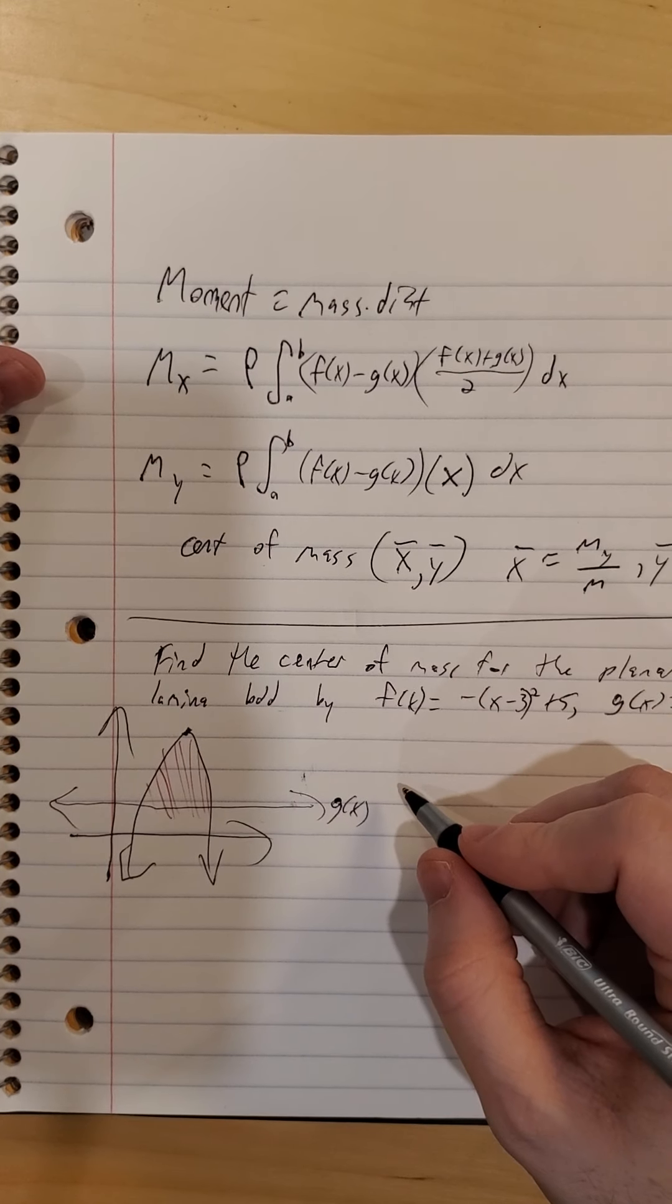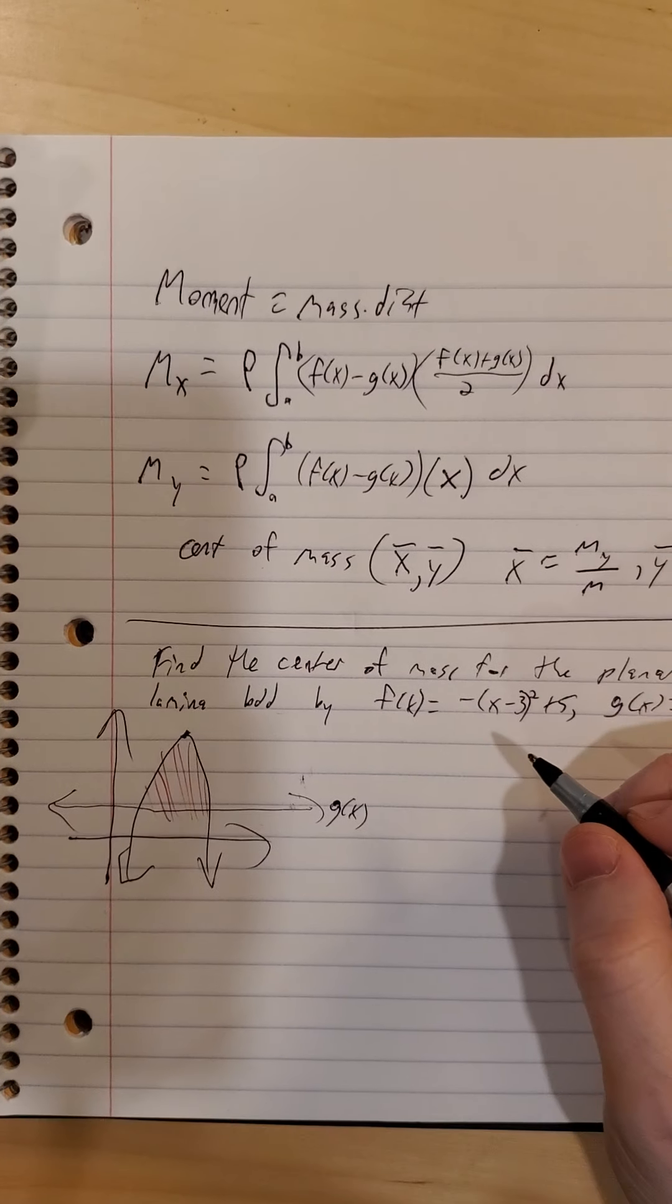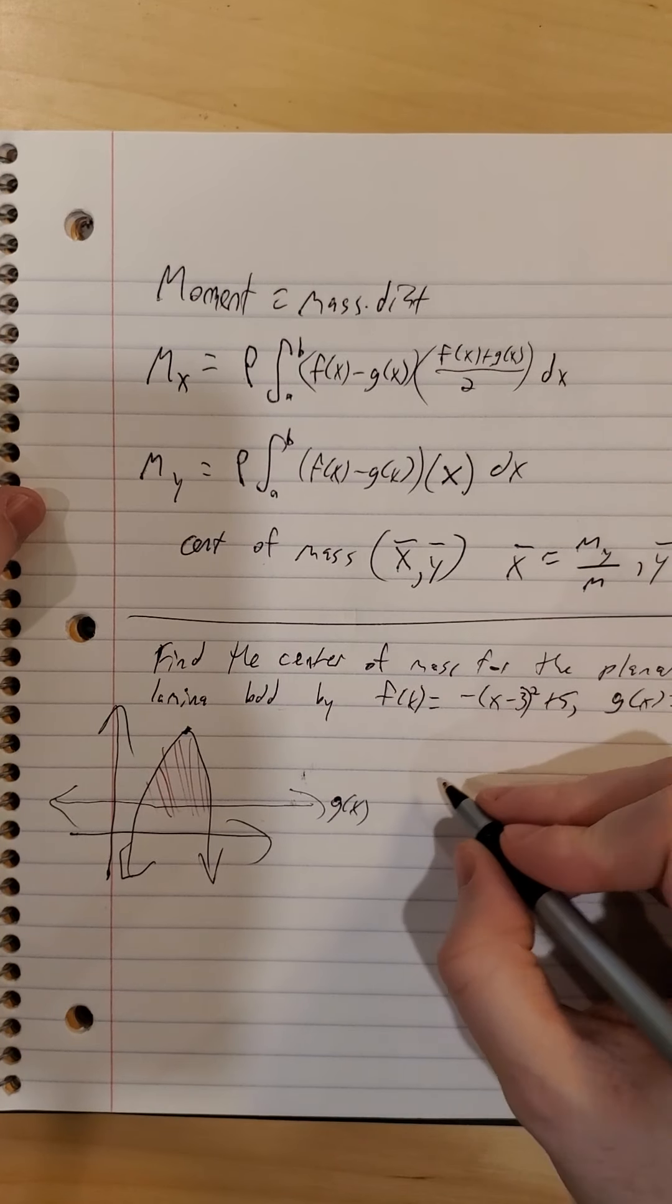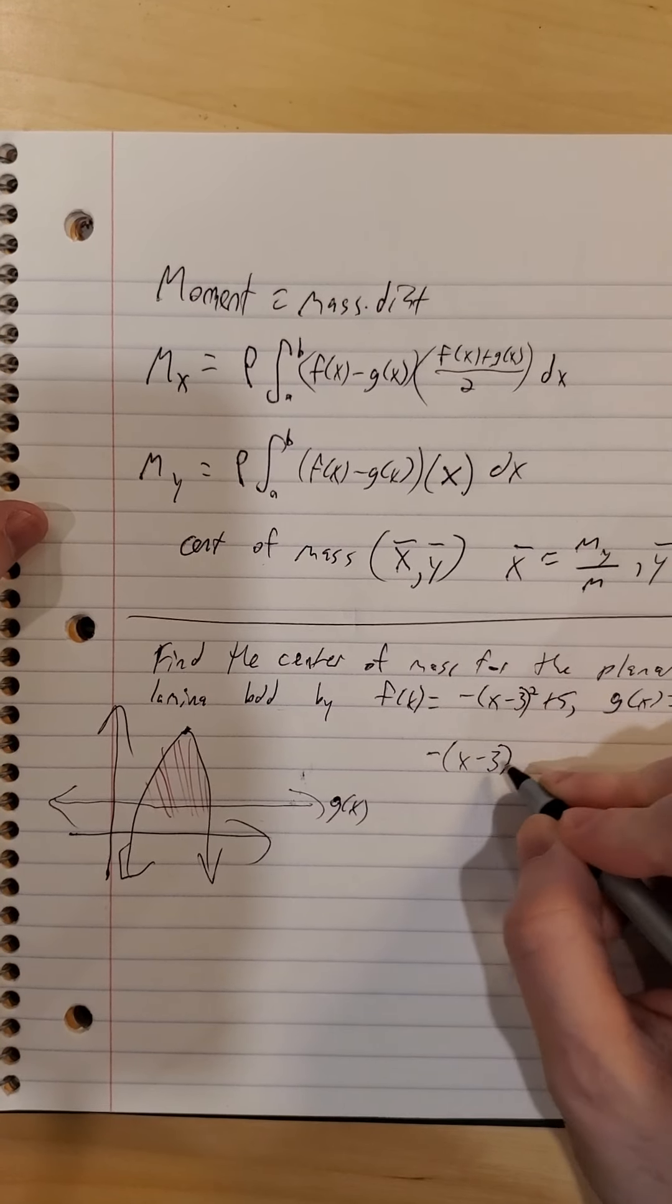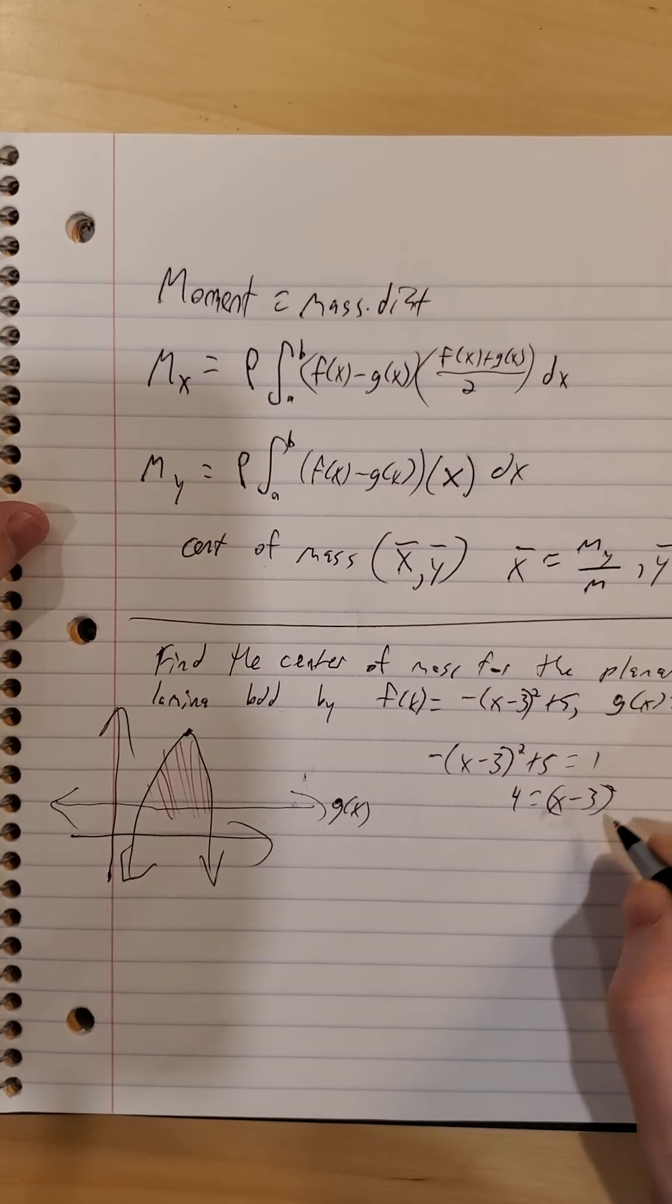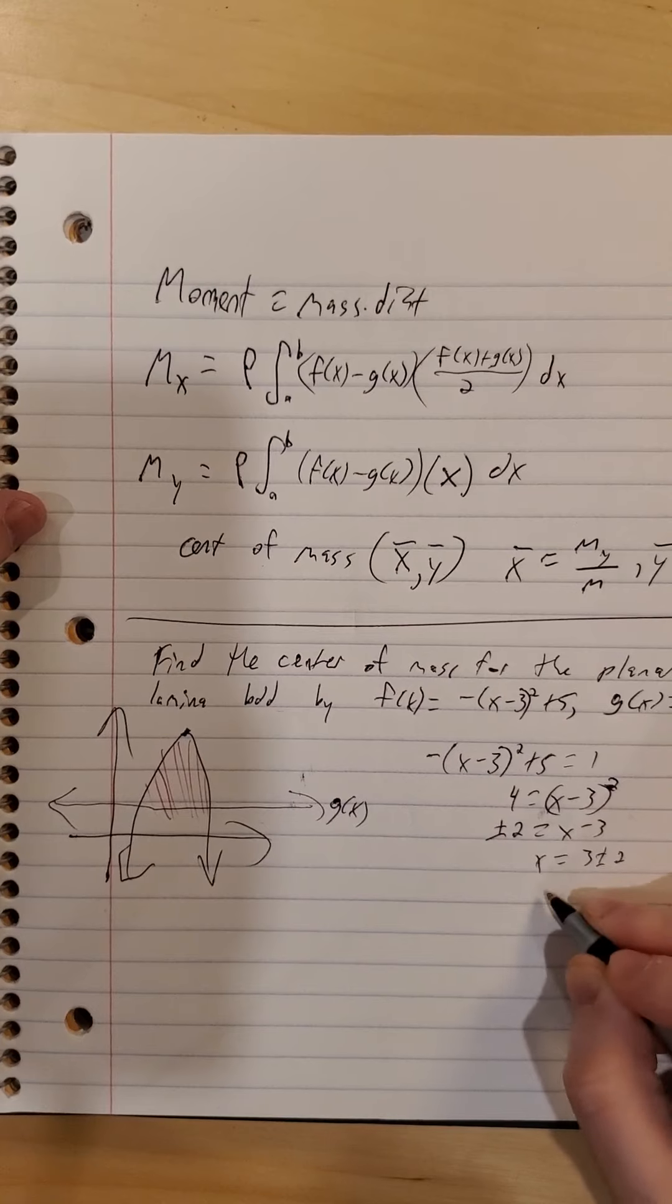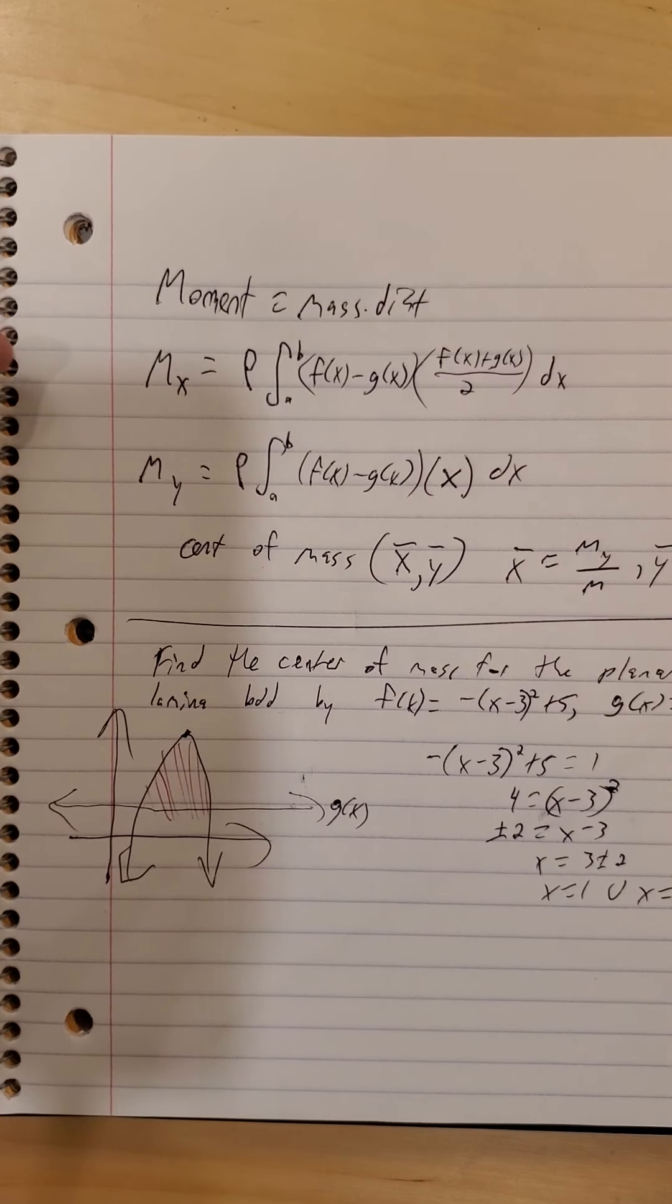Now you may have some idea of where x-bar should be already with this nice, neat, pretty symmetry we have on the parabola. You should have a little bit of a suspicion as to where that will be. So the real question is, on the vertical axis, where is our center going to be? Well, one of the bits of information we need is where are these endpoints. Set the functions equal to one another. So 4 is x minus 3 quantity squared. Plus or minus 2 is x minus 3. So x is 3 plus or minus 2. So x is 1 or x is 5.